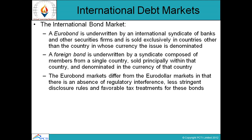The international bond market: A euro bond is underwritten by an international syndicate of banks and securities firms and is sold exclusively in countries other than the country in whose currency the issue is denominated. A foreign bond is underwritten by a syndicate from a single country, sold principally within that country, and denominated in the currency of that country. The euro bond market differs from the euro dollar market in its absence of regulatory interference, less stringent disclosure rules, and favorable tax treatment.